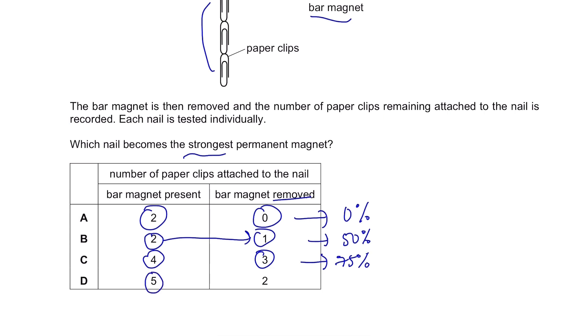And then you put five and two remains. This is forty percent remaining. So we can say that the third one, since seventy-five percent of the nails have still been attracted to the nail even when the bar magnet was removed, it's the strongest one.